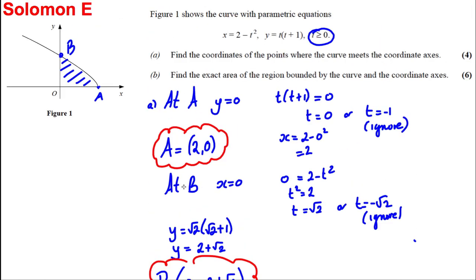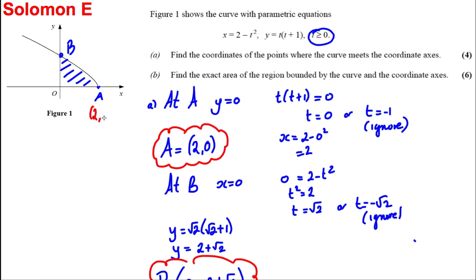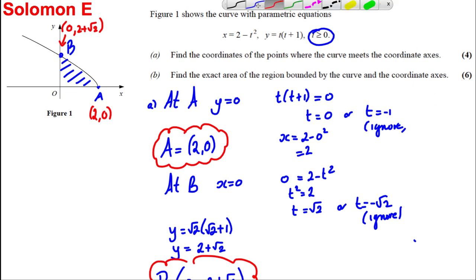We can now write in that A is (2, 0) and B is (0, 2 + √2), and that completes part A for four marks. Note that at point A, t = 0, and at point B, t = √2.